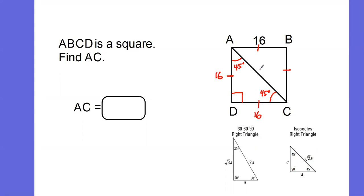So taking this and multiplying by the square root of 2 gives me 16 root 2. So segment AC is 16 root 2.